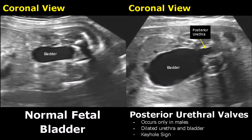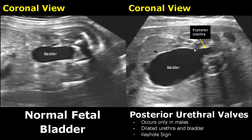In posterior urethral valves, membranes form in the urethra which cause the posterior urethra and the bladder to become dilated. This only occurs in males, and this appearance has a special name known as the keyhole sign.